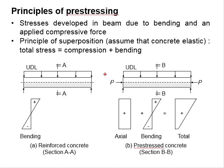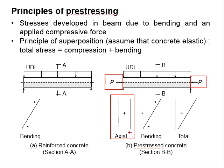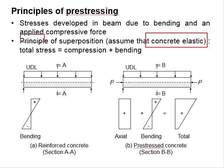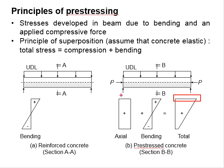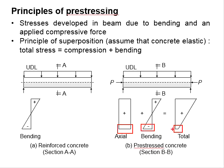In the existence of the pre-stressing load, an axial force is generated within the cross-sectional area of the beam section. Assuming that the concrete is elastic and the principle of superposition applies, the total stress will be the summation of the compressive stress plus the bending stress. This means the stress at the top will be the summation of the two compressive stresses, while the total stress at the bottom will be the axial compressive stress minus the stress due to tension, giving a total stress.